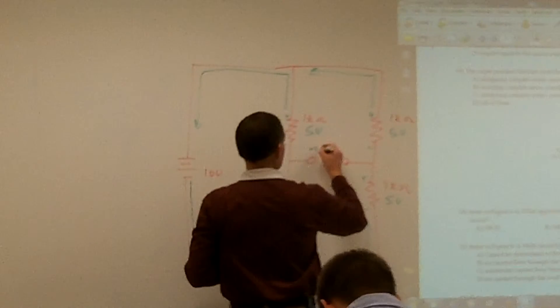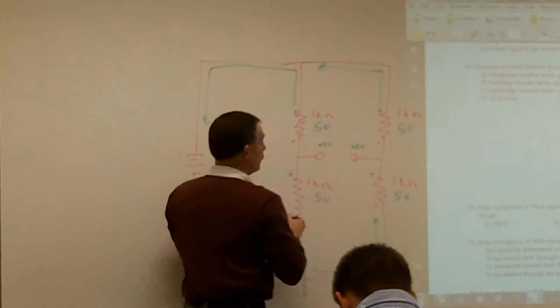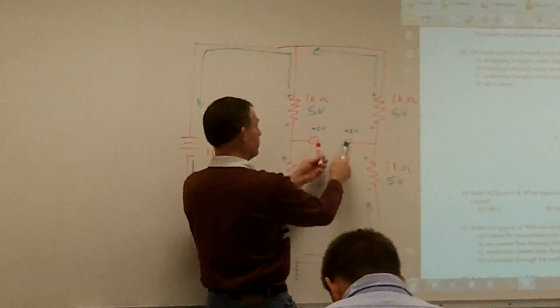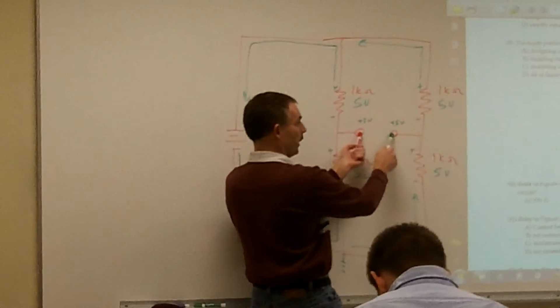So this one would be a positive five volts, and this one would be a positive five volts. So if I was coming out of my output and I put my meter across here, what would it read for a potential difference between those two points?